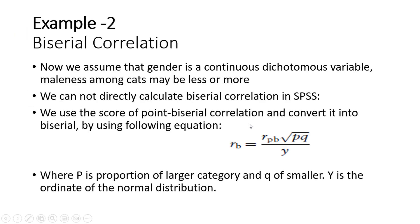Now we assume that gender is a continuous dichotomous variable — for example, the maleness of a cat may vary in degree, so some male cats are more male compared to others. Let's assume this characteristic is a continuous dichotomous variable. As noted earlier, we cannot directly calculate the biserial correlation in SPSS, so we use the point biserial score and convert it using the following equation. The formula for biserial correlation coefficient r_b involves the point biserial r_pb, the proportions p and q, and the y-coordinate of the normal distribution.